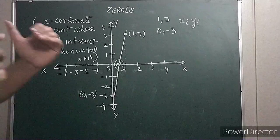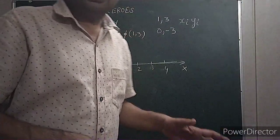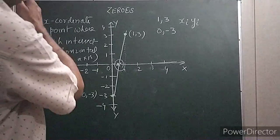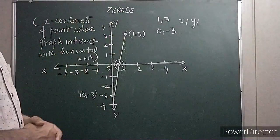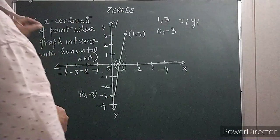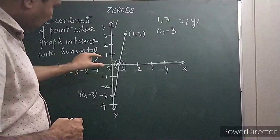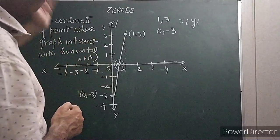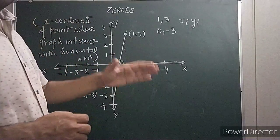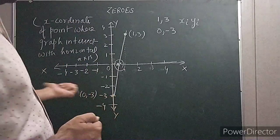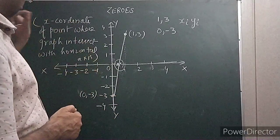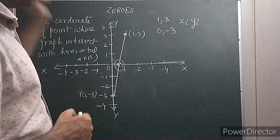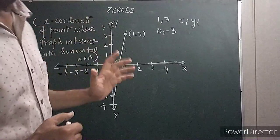If you have any graph — whether it is a cubic polynomial, a quadratic, or a linear — you plot that graph and the points where the graph intersects the x-axis, whether on the positive side or the negative side, the x-coordinate of that point will be the zero of that particular expression.